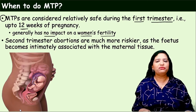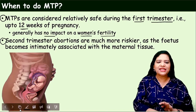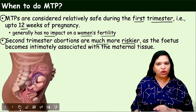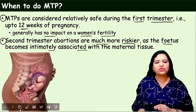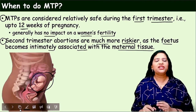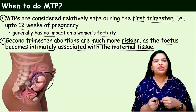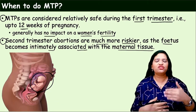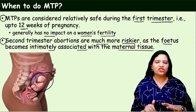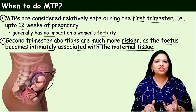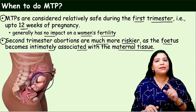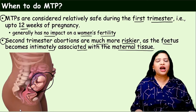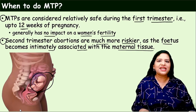If the MTP is done in the second trimester, such abortions are more risky because the fetus becomes intimately associated with the maternal tissue. The well-grown fetus has a good connection with maternal tissue, and together with the chorionic villi they form the placenta. If abortion is done at such a time, it is highly risky for the mother and may even result in the death of the mother. That is why doing abortion in the second trimester is not recommended at all.